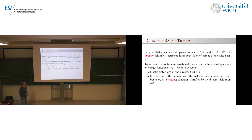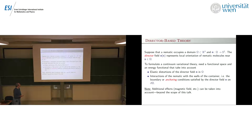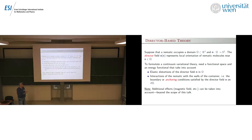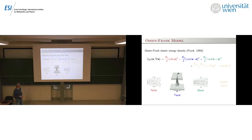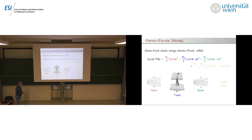This interaction with the wall of the container is described by so-called anchoring conditions, which is a fancy name for boundary conditions for a director field on the domain boundary. The principal modes of deformation — splay, twist, and bend of a director — are described by similarly colored terms, as well as a saddle-splay term, which eventually becomes a null Lagrangian.